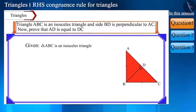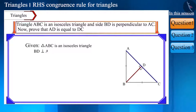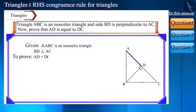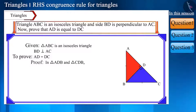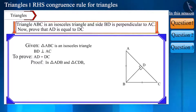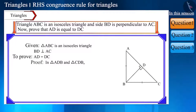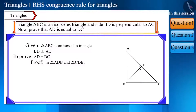Triangle ABC is an isosceles triangle and side BD is perpendicular to AC. Prove that AD is equal to DC. Friends, if we prove that triangle ADB is congruent to triangle CDB, then the corresponding sides of congruent triangles are congruent, so side AD is equal to side DC. Our aim is to prove that these two triangles are congruent.